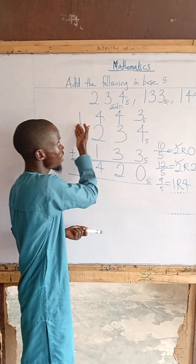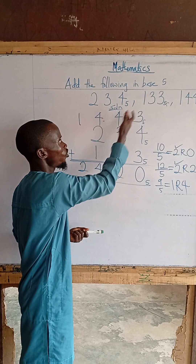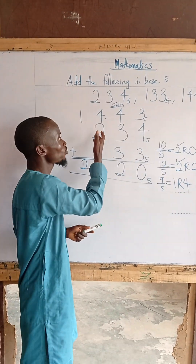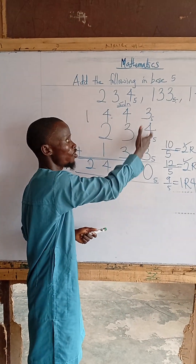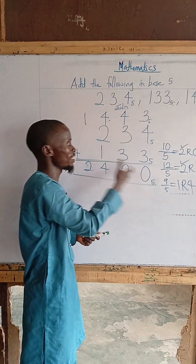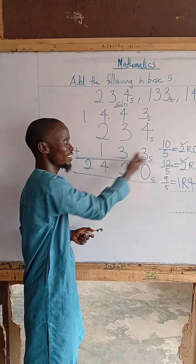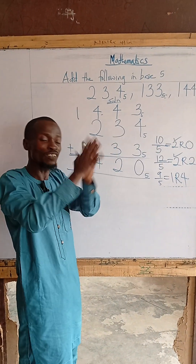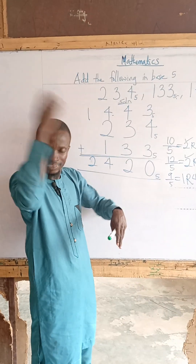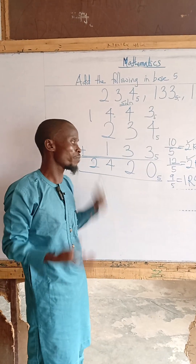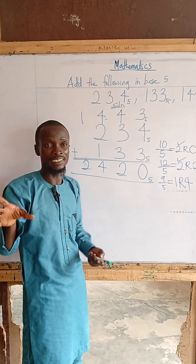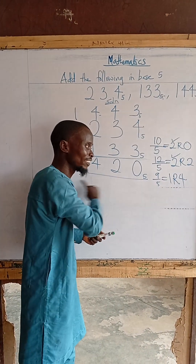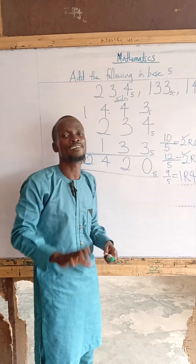You can verify this answer by converting 1, 4, 4, 3 to base 10, converting 2, 3, 4 to base 10, and converting 1, 3, 3 to base 10. Then add them together and change the final answer back to base 5. You will arrive at the same answer.